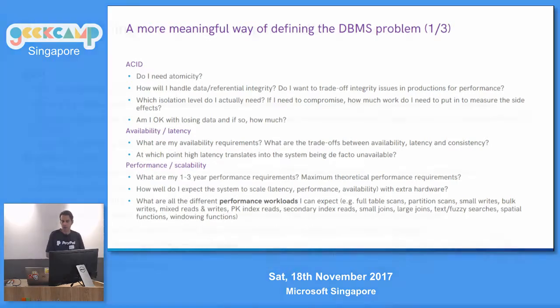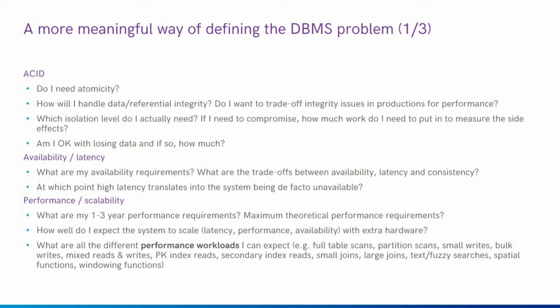Now we're getting to the real stuff: a practical framework to guide you through what you need to consider before choosing a database. Starting from ACID: do I need atomicity? Data referential integrity — do I want to trade off integrity issues for production performance? You can disable foreign keys and primary keys and do validation and damage assessment later, but that requires additional effort. It's all about trade-offs: if you enable all constraints upfront, you don't have to do any of that.